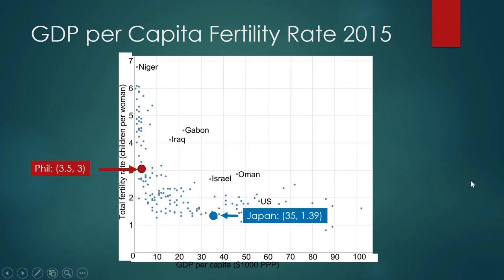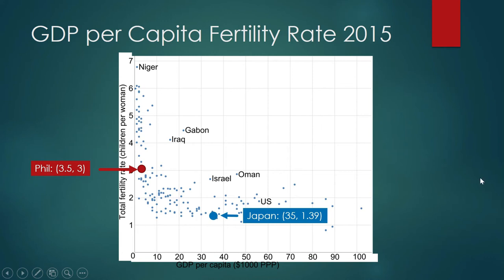What is the pattern revealed by this scatterplot? Fertility rate is inversely proportional to GDP per capita. As the fertility rate of a nation decreases, per capita income increases. And the other way around: as per capita income of a nation decreases, the fertility rate of their women increases.